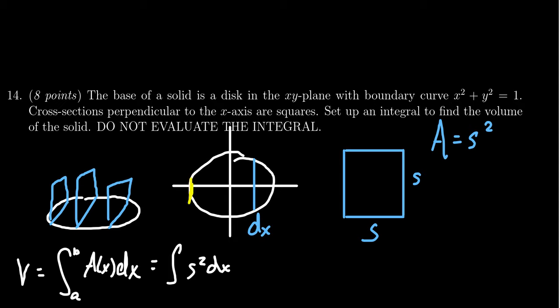Looking from on top, we go all the way over here to here, which the one on the left is negative one, the one on the right is positive one. So we're going to integrate from negative one to one s squared dx.